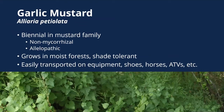The first one is garlic mustard. A lot of us are probably familiar with this plant. It is a biennial in the mustard family. It is a non-mycorrhizal plant, meaning it does not need to associate with mycorrhizal fungi in the soil to collect nutrients and grow. It's also been shown to be allelopathic — it exudes almost a fungicide out of its roots which inhibit those mycorrhizae from developing, giving it a competitive edge. It grows mostly in moist forest, is very shade tolerant, and is easily transported on equipment, shoes, horses, and ATVs.